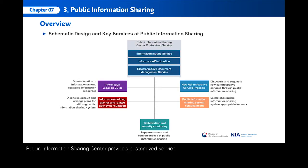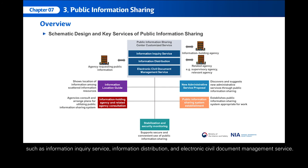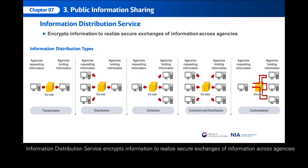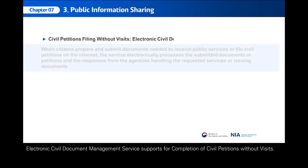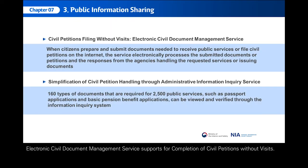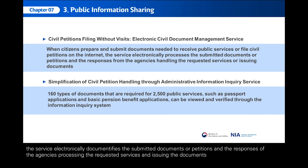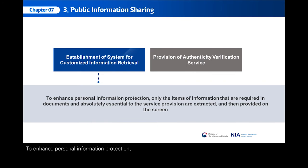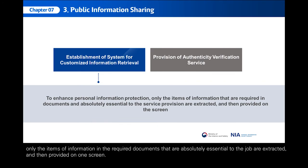The Public Information Sharing Center provides customized services such as information inquiry service, information distribution, and electronic civil document management service. Information Distribution Service encrypts information to realize secure exchanges of information across agencies. Electronic Civil Document Management Service supports completion of civil petitions without visits. When citizens prepare and submit documents needed to receive civil services or file civil petitions on the Internet, the service electronically documentifies the submitted documents or petitions and the responses of the agencies. Public Information Sharing establishes a system for customized information retrieval; only the items of information that are absolutely essential to the job are extracted and provided on one screen.